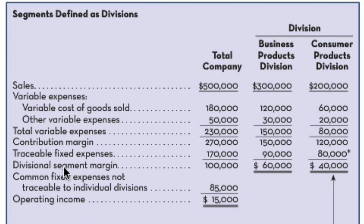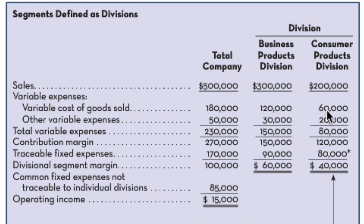From the contribution margin, notice what's taken off first: traceable fixed expenses. The traceable fixed expenses come out of each division, and once we do that, we have our divisional segment margin. That is where the segment report ends for each segment. From the total company, we then subtract the common fixed expenses not traceable to the individual divisions — $85,000. This $85,000 would still exist even if you eliminated one of the divisions. That's why it's called common — it's common to all the divisions — giving an operating income of $15,000.